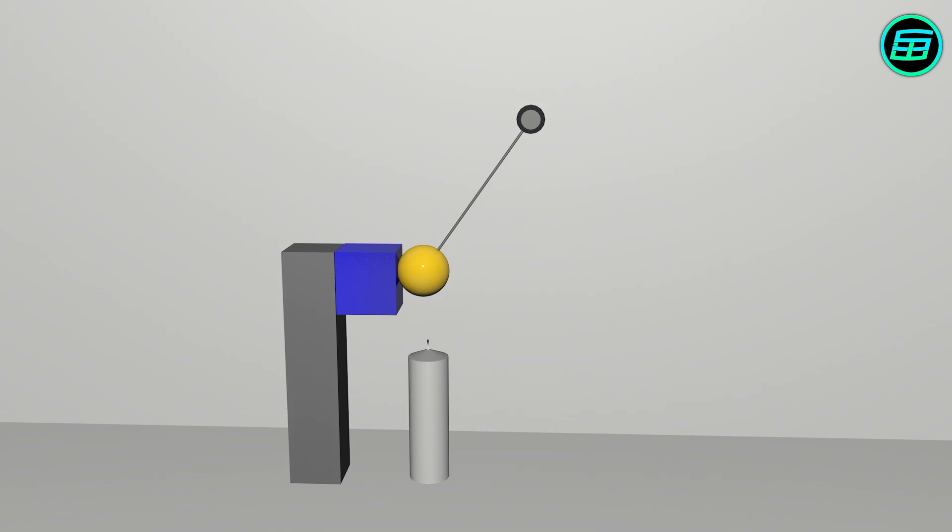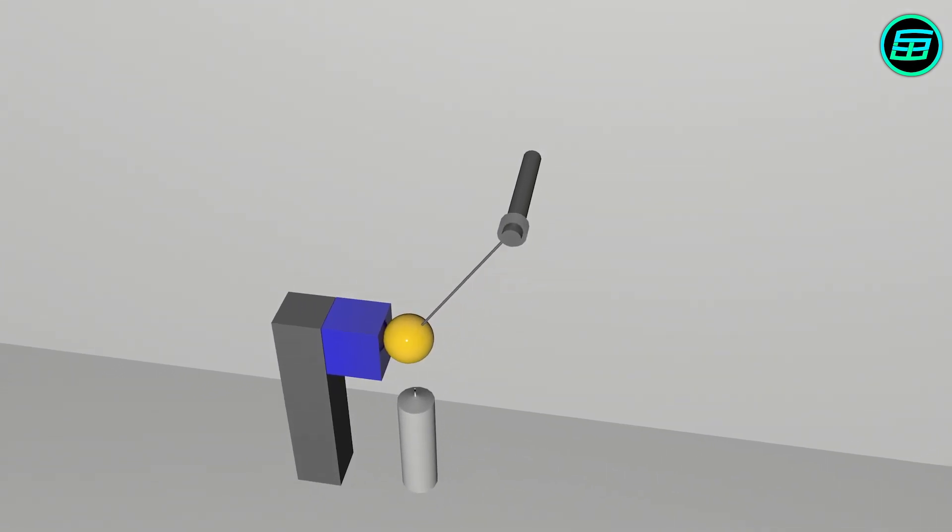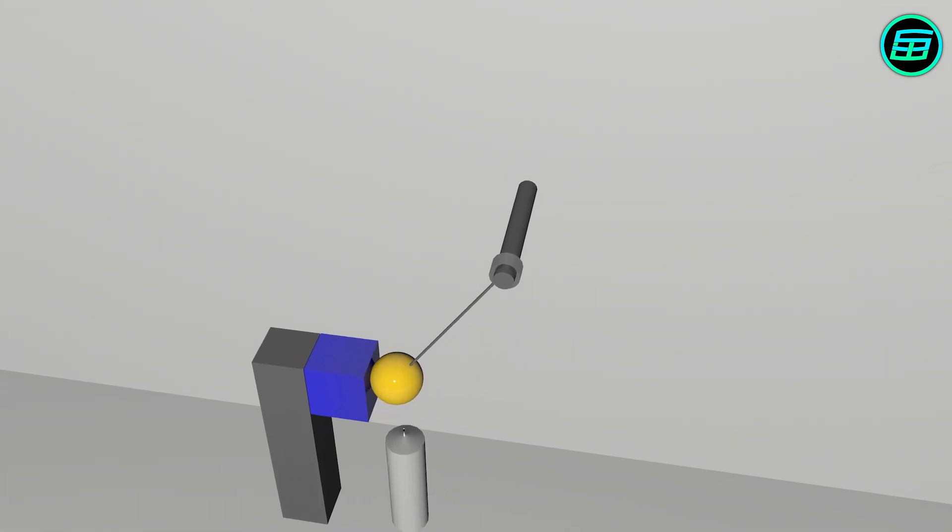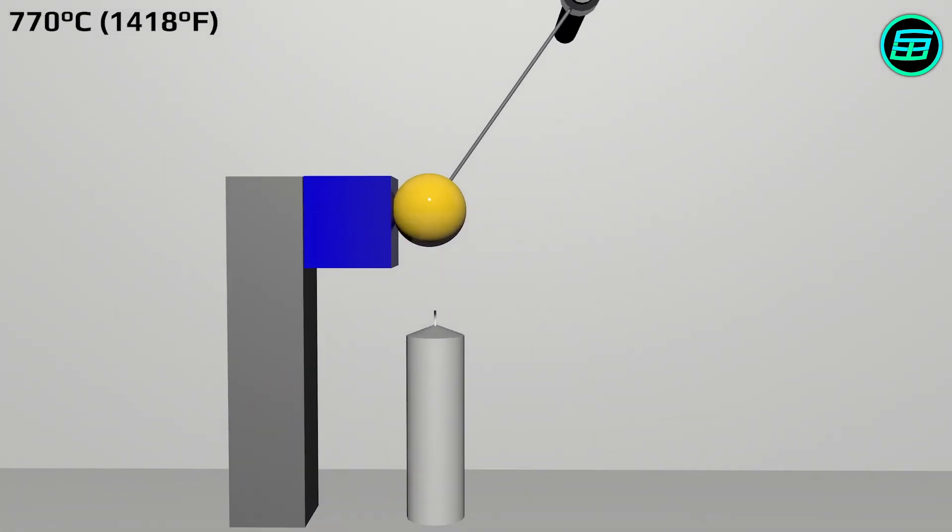This temperature is called the Curie temperature or Curie point. For example, the Curie temperature of iron is approximately 770 degrees Celsius.